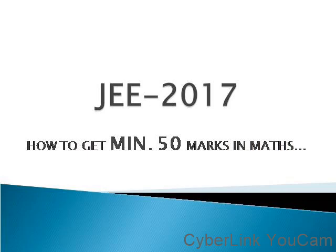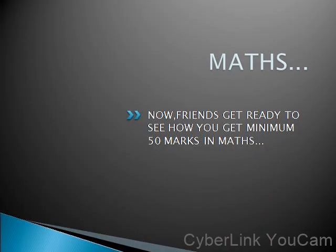Friends, you are watching this awesome video channel. I am going to tell you the method by which you can get a minimum of 50 marks in mathematics in JEE 2017. Just follow my instructions and you are definitely going to get it. You can score minimum 50 marks in maths, 50 marks in chemistry, and 50 marks in physics.